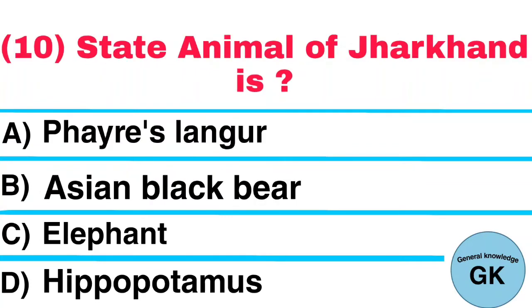Question Number 10. State Animal of Jharkhand is: A. Fares Lingur, B. Asian Black Bear, C. Elephant, D. Hippopotamus. Answer: Elephant.